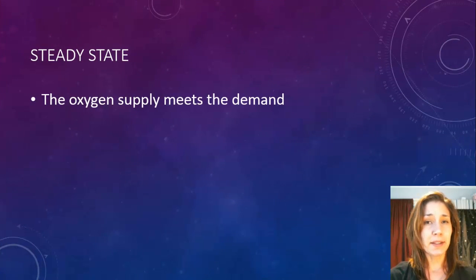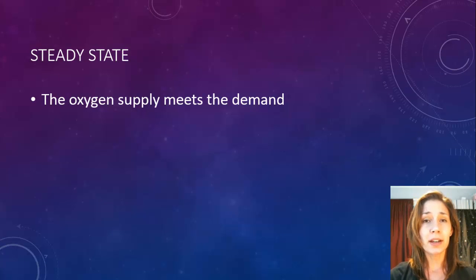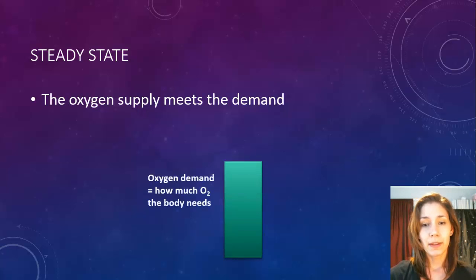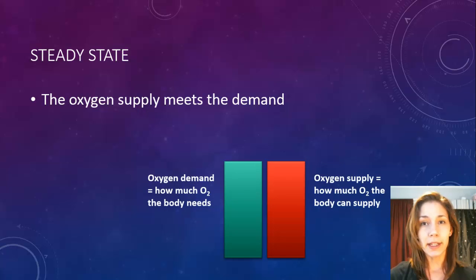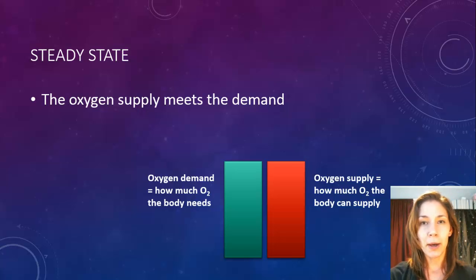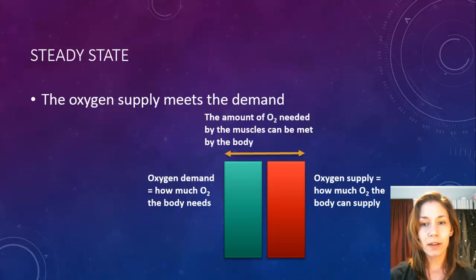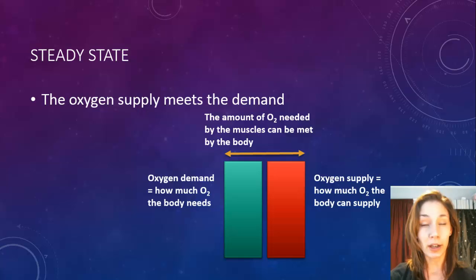Steady state is basically when oxygen supply meets oxygen demand. You're exercising, you have a certain requirement for oxygen, and your body is able to supply enough. Looking at the graph, you've got oxygen demand, but this time the red graph actually meets the green graph — oxygen supply is meeting oxygen demand. The yellow arrow represents that everything's equal — not too much and not too little oxygen — and the body can exercise aerobically quite comfortably.